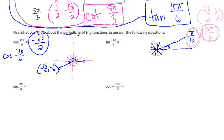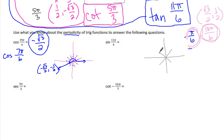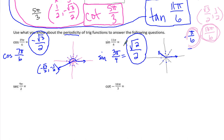For the sine at 11π/4, we divide the circle into fourths — every 45 degrees — and count 11 of them starting at the positive x-axis. Counting 11 tick marks, 11π/4 is coterminal with 3π/4. So the sine at 3π/4 is √2/2, and that is also the answer to the sine at 11π/4. We're using the period — once you go around the circle one time, everything repeats.